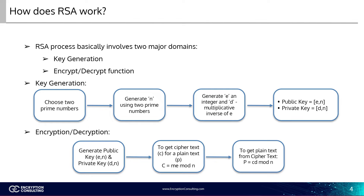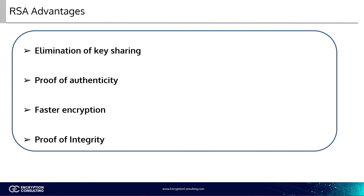So let's move on to some advantages of RSA. There are several real-time use cases for RSA. It helps in performing encryption without much hassle and also helps in authenticating the user. Four major advantages are identified. Starting with the elimination of key sharing — cryptography key usage is reversed in the RSA procedure for encryption and decryption. RSA leverages the receiver's public key to encrypt the data, and the receiver's private key is used to decrypt the data. Thus, there is no need to exchange any keys in RSA.